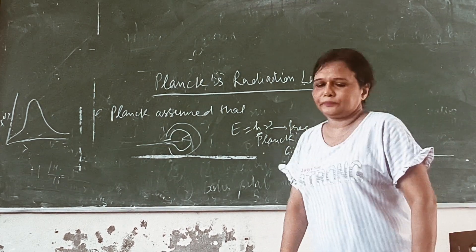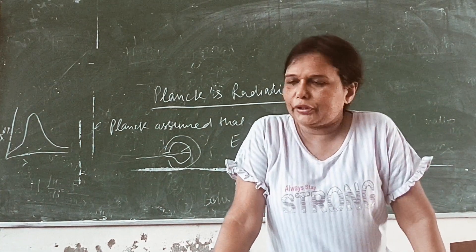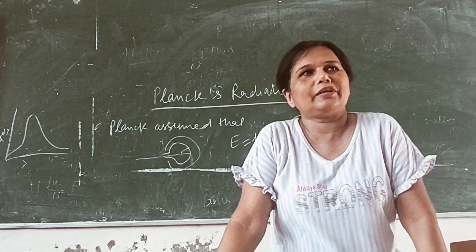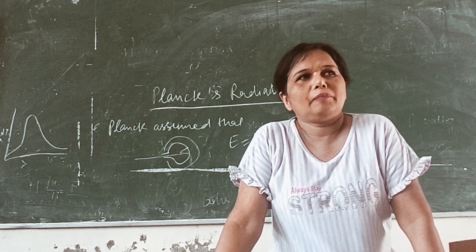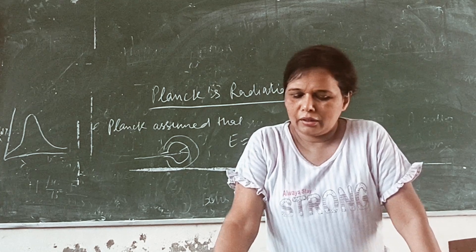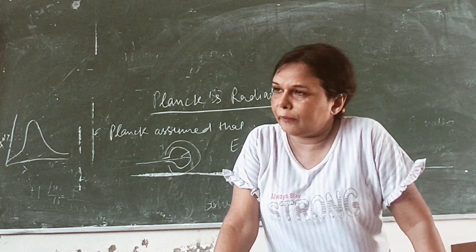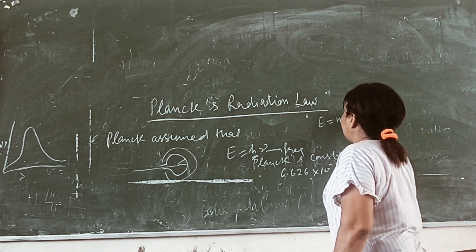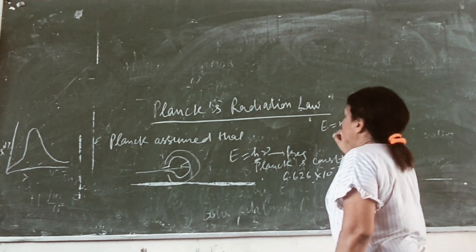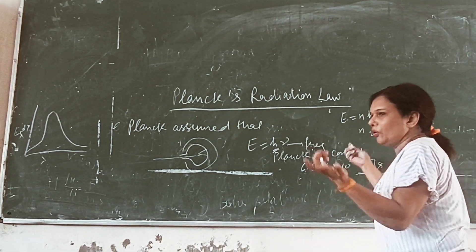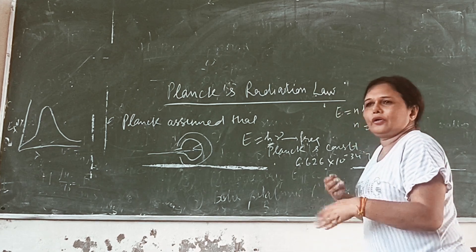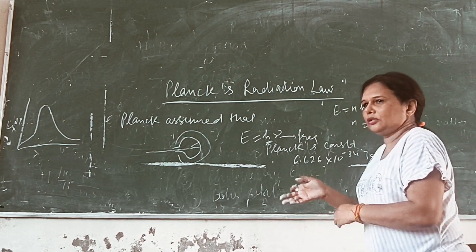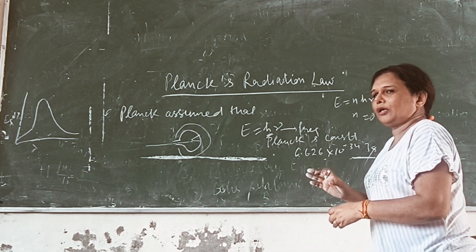The energy can be in whole number multiples, that means E is equal to nhν, where n is equal to 0, 1, 2, 3... The value of energy at n equal to zero is zero.